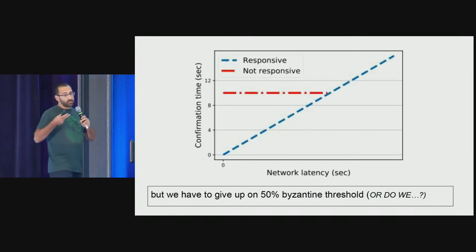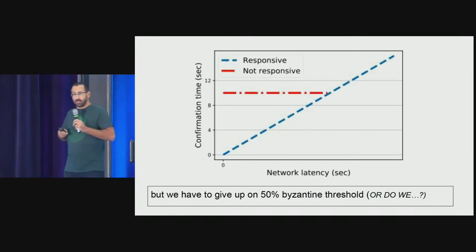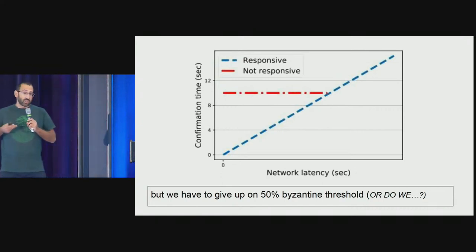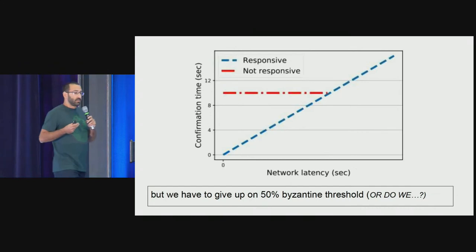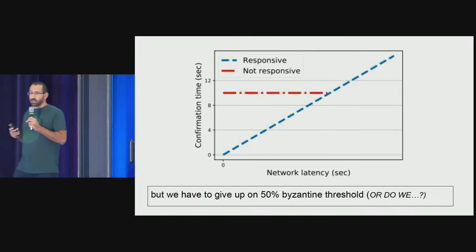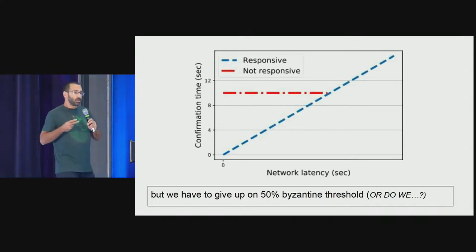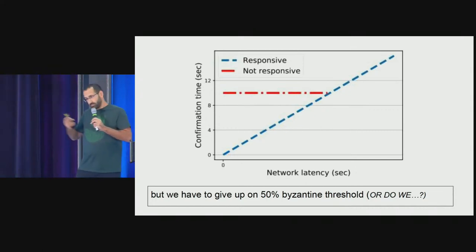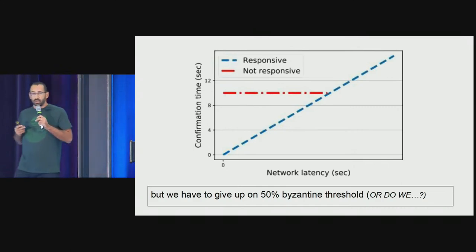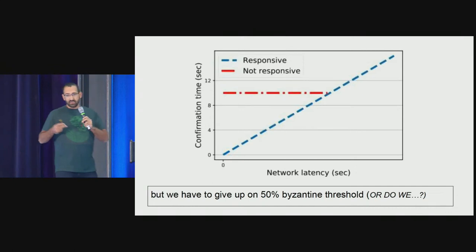In Bitcoin, we have the 10-minute latency parameter, but since then the network infrastructure has improved immensely, and we're still stuck with this block interval of 10 minutes. Similarly, in any synchronous consensus protocol, you are stuck with a parameter you began with. If you have a block time of 12 seconds, you're stuck with it even if the network is much, much faster.